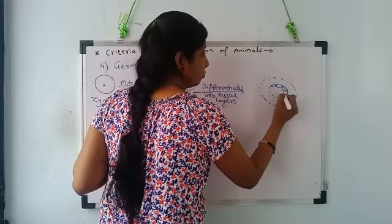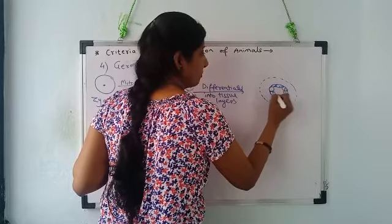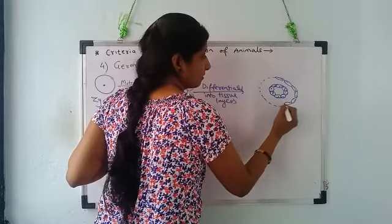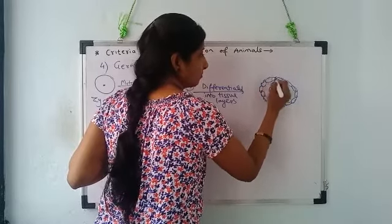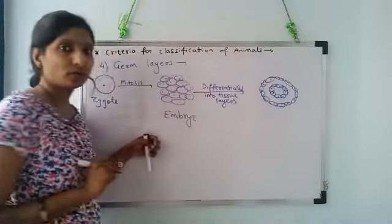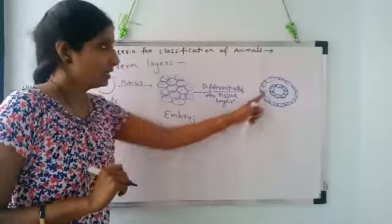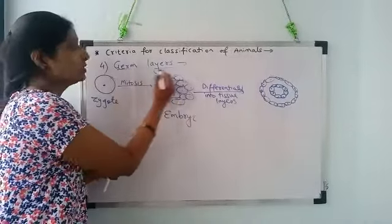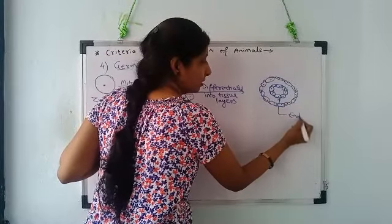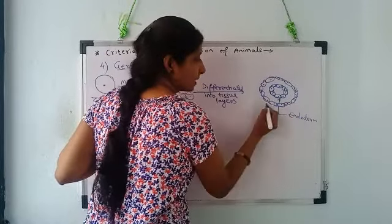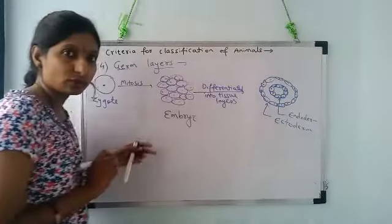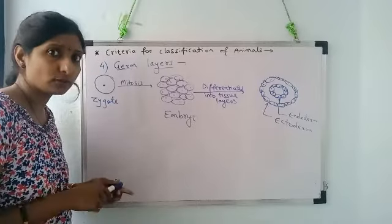Let me draw it here. Suppose this group of cells separated to form a first layer of tissue. This group of cells formed to form a second layer of tissue. Now here, once these layers are formed, these layers are called germ layers, that is tissue layers. The inner layer is called endoderm and the outer layer is called ectoderm.